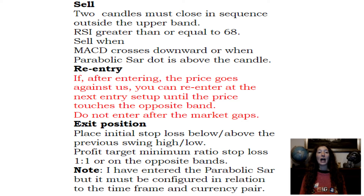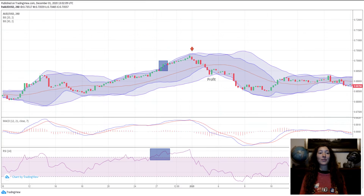Sell rules: Two candles must close in sequence outside the upper band. RSI greater than or equal to 68. Sell when MACD crosses downward, or when Parabolic SAR dot is above the candle.